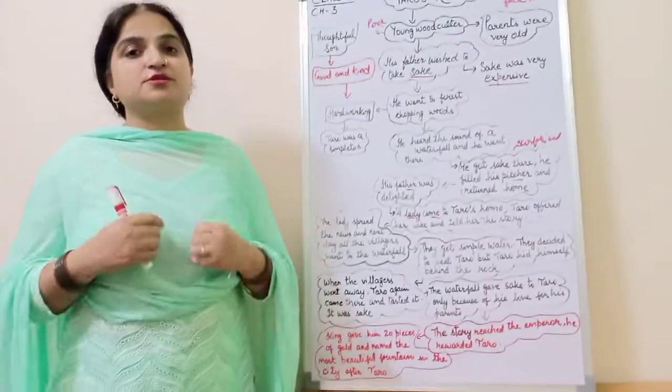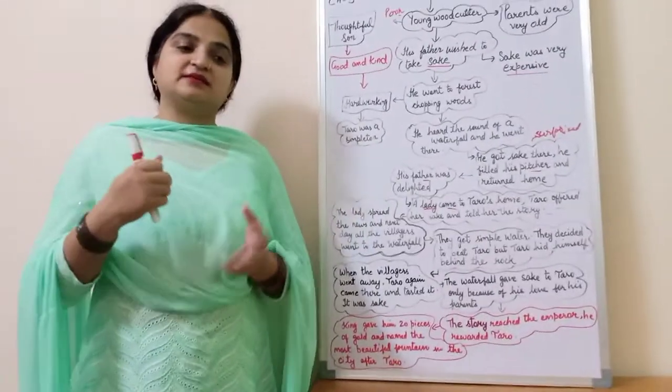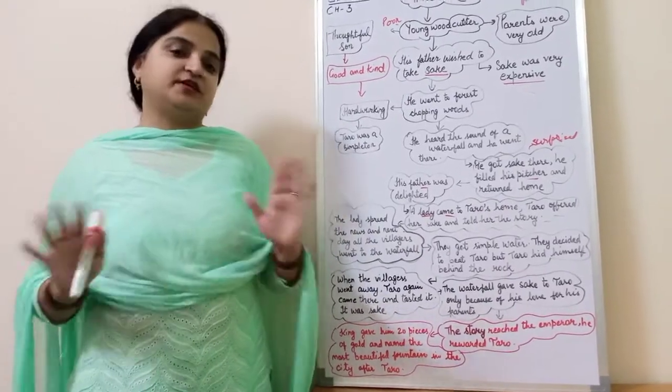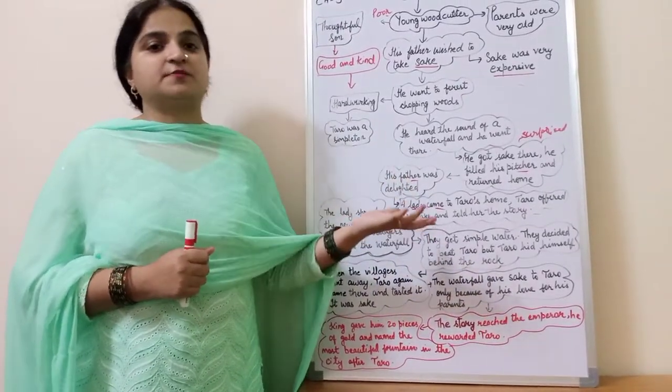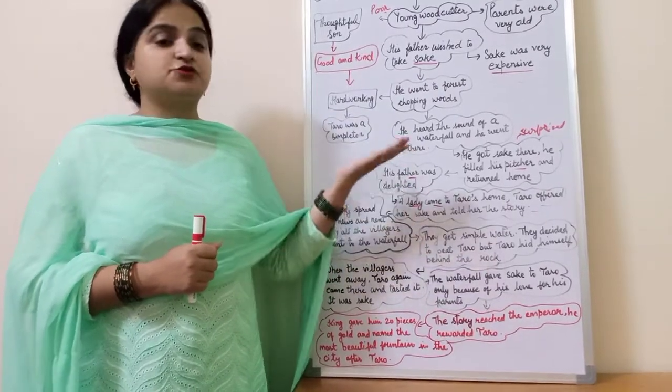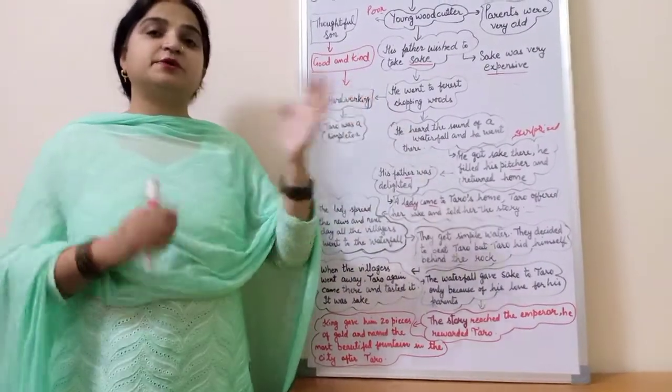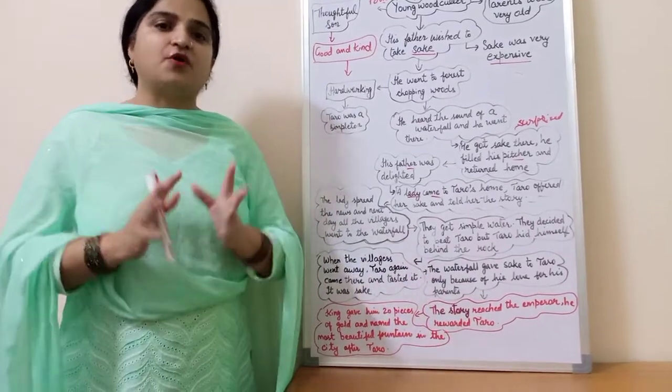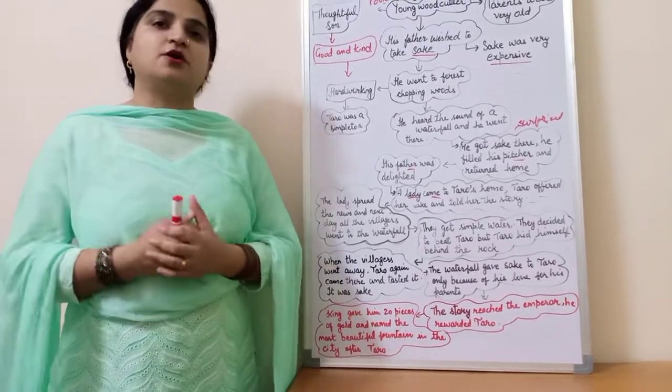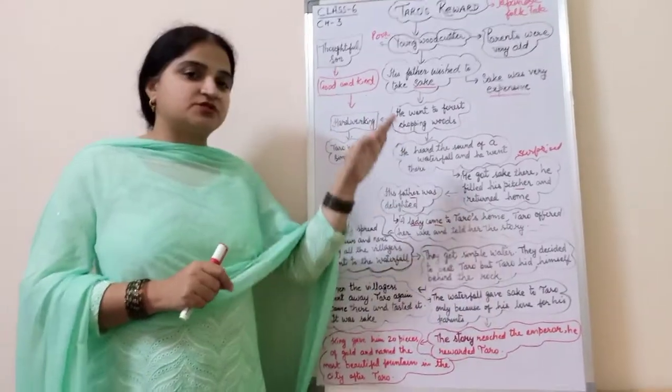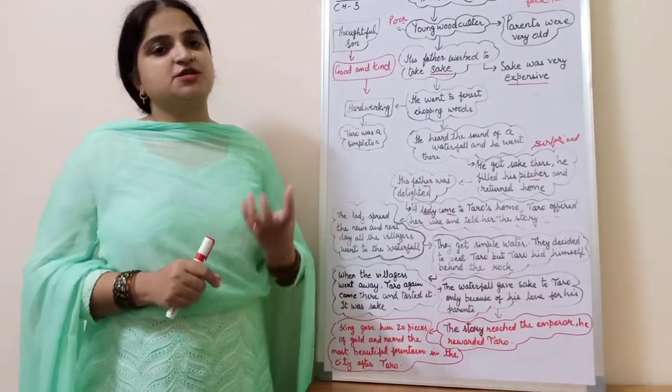So this was the reward which Taro received because of his love, his sincerity towards his parents, his nature of hard working. So he was really a very good person. So the message of this story is that we should love our parents. We should obey our parents and we should be sincere for our parents. We should be hard working also. We should be good and kind because all these qualities are always rewarding. They pay a person in the long run of life. So this was the message which the writer or which the story want to convey from this story. It is a moral value based story.